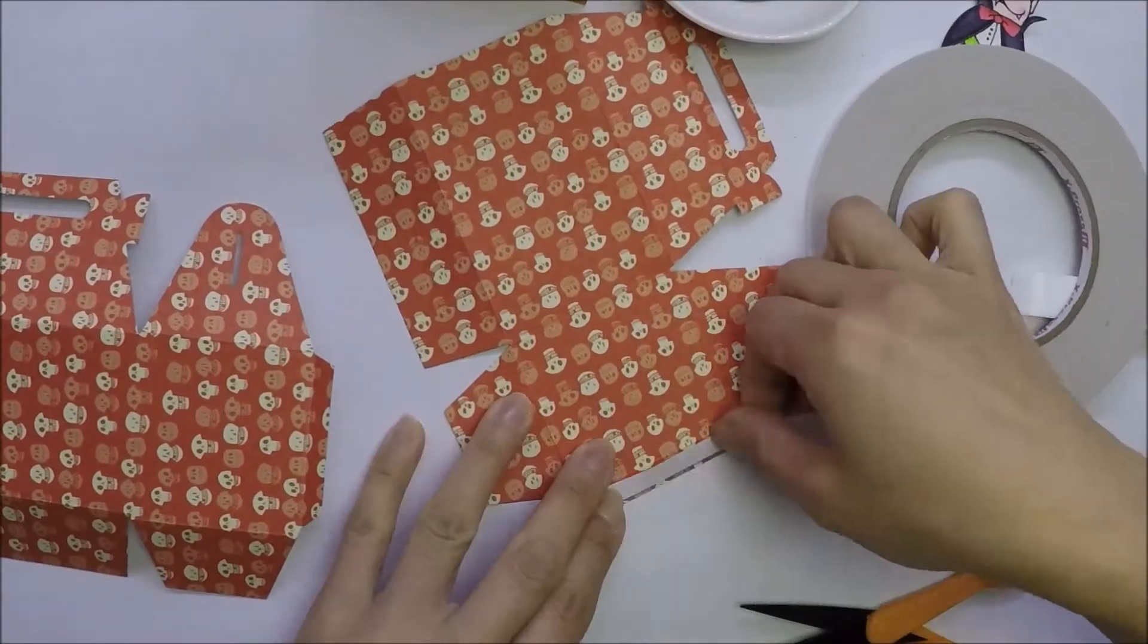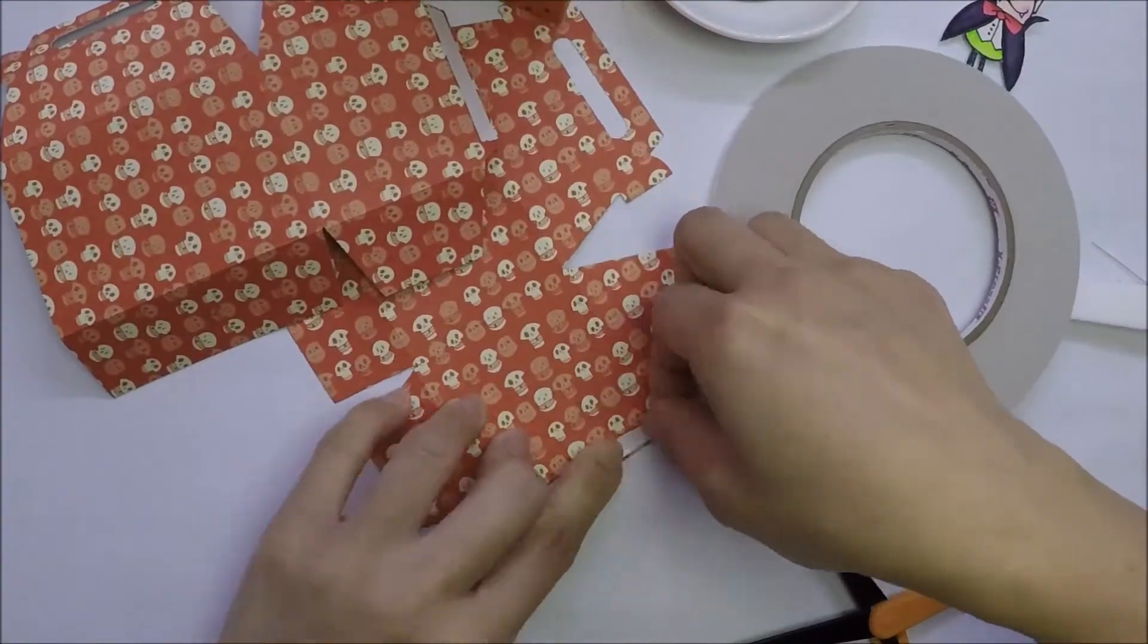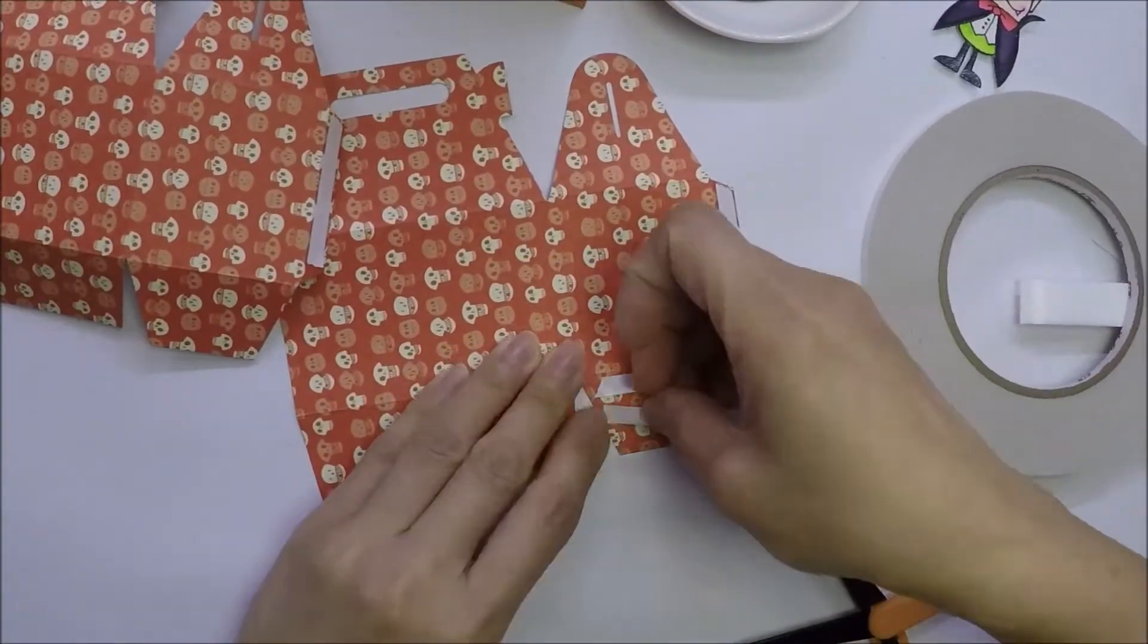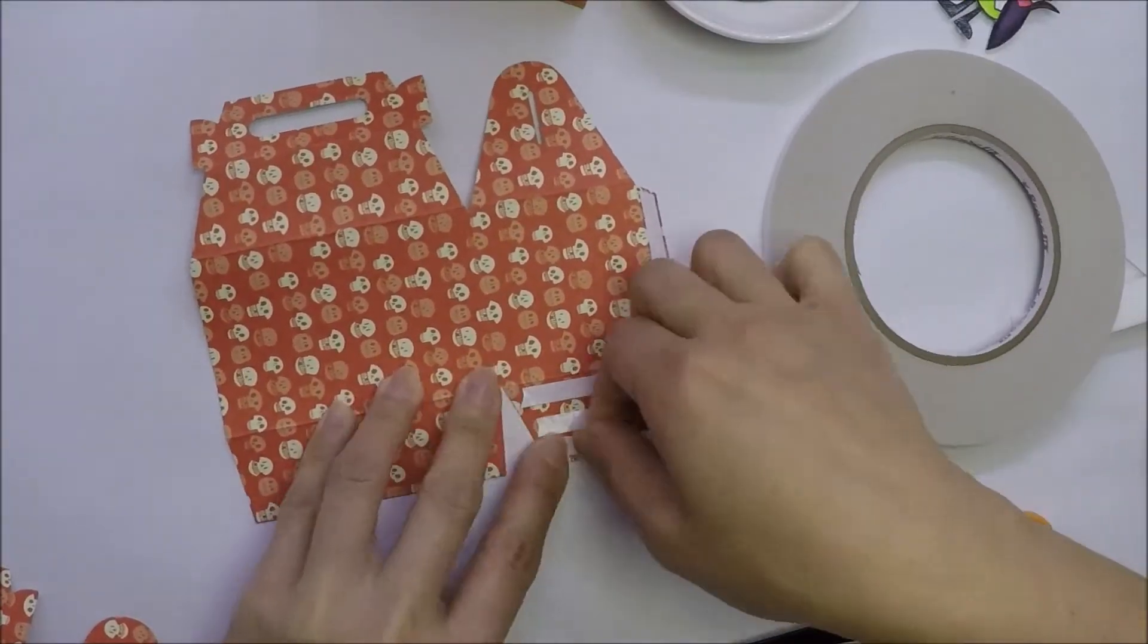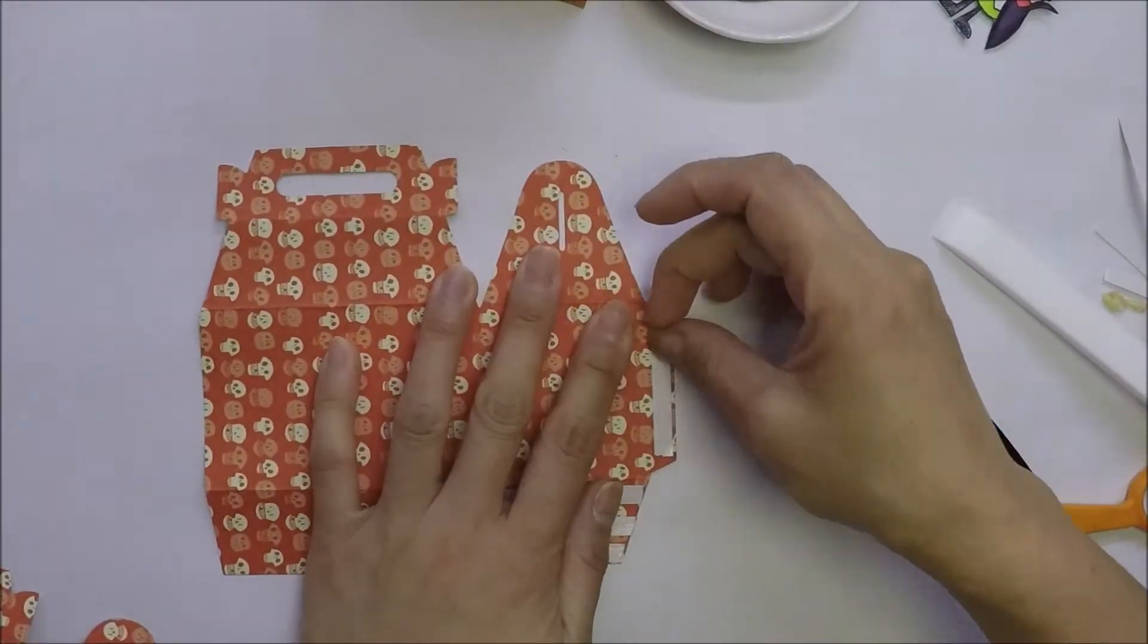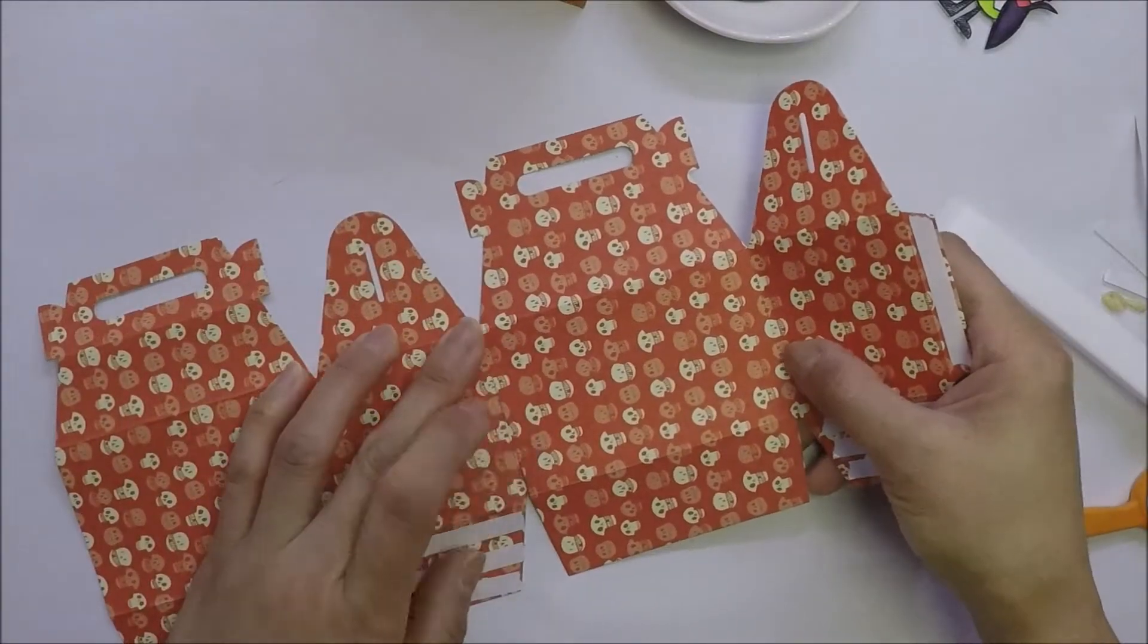I use strong double-sided tape on the flaps that need to have the tape. I connect the two die cut pieces together, making sure it's adhered well together. I fold the box and connect to the other side.